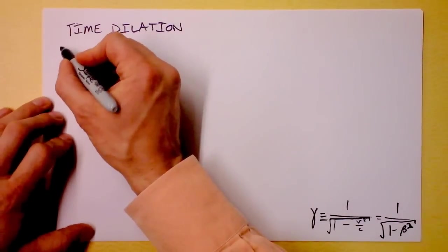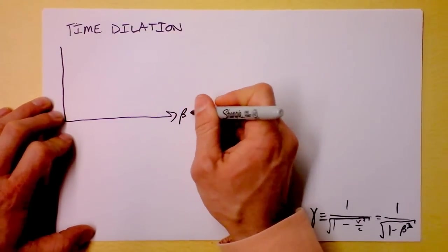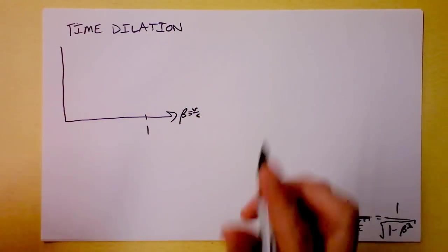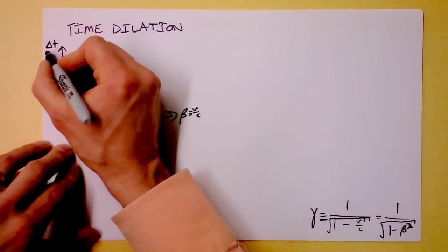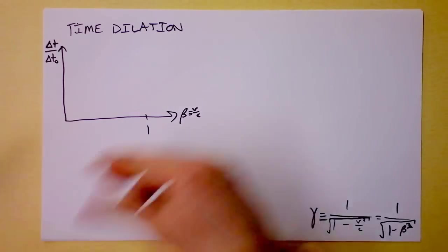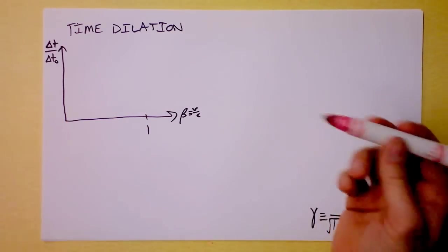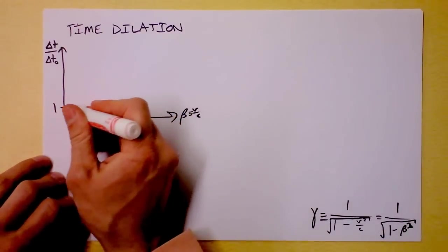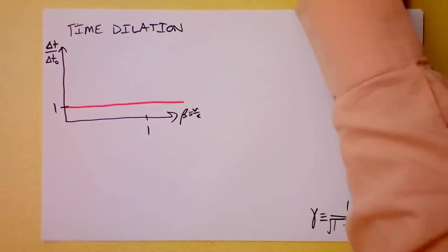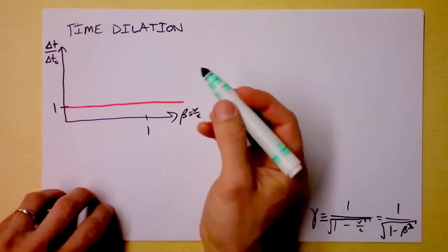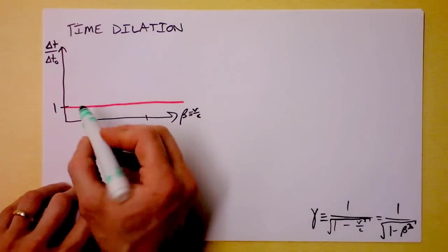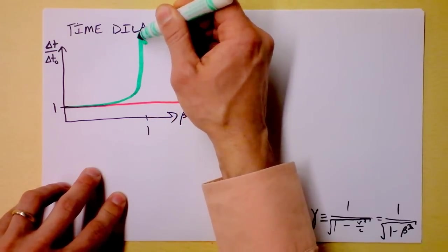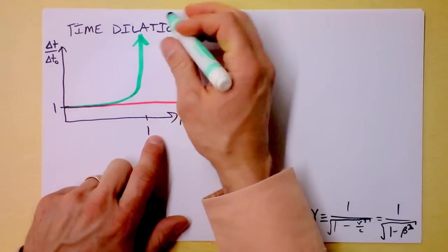I'm going to draw a graph of time dilation. Beta is on this axis — the speed of the object over the speed of light — and beta doesn't get bigger than 1. Time dilation is defined as the time you observe divided by the proper time. In red, representing the classical solution, time is just time — it stays flat at 1. In seafoam green, the relativistic solution says time gets longer as speed increases, starting almost the same, then growing large, then going to infinity as we approach beta equals 1.